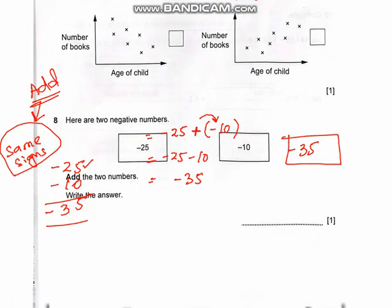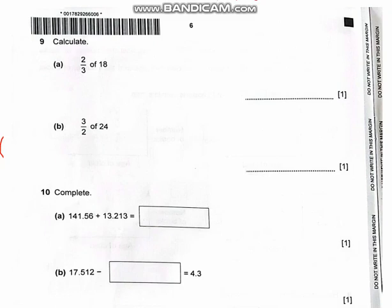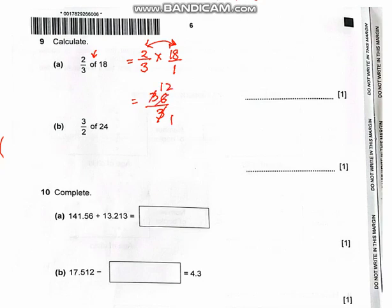Now let's move to the next question. Question number 9: calculate 2/3 of 18. Whenever you see the word 'of' in mathematics, it means multiply. So you do 2/3 times 18/1. The numerators multiply together and the denominators multiply together. So 2 times 18 is 36, and the denominator is 3. Now we simplify: 36 divided by 3 is 12. So the answer is 12.